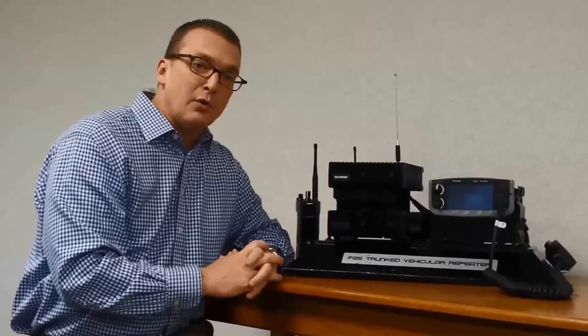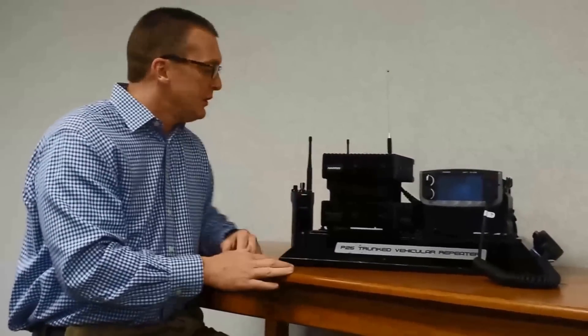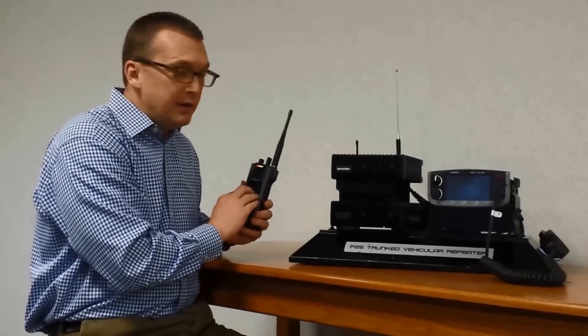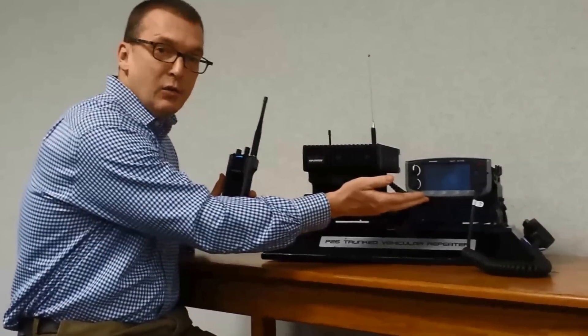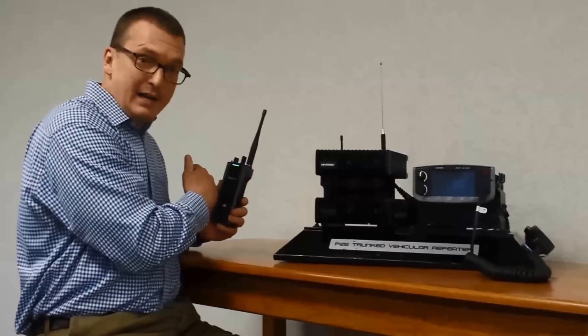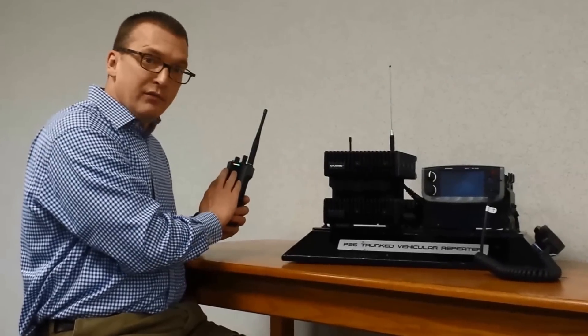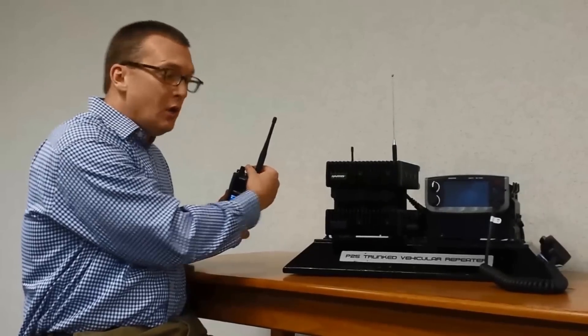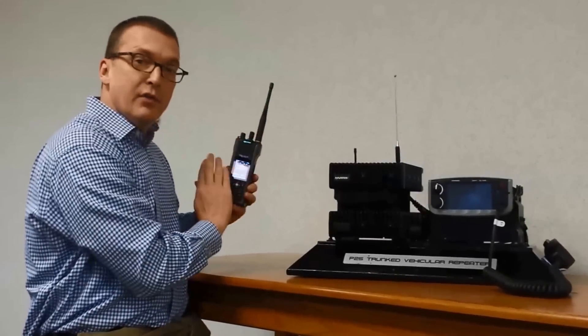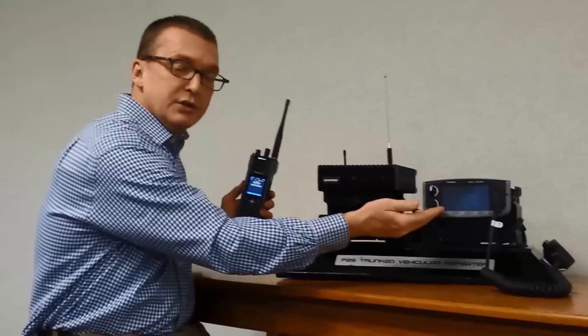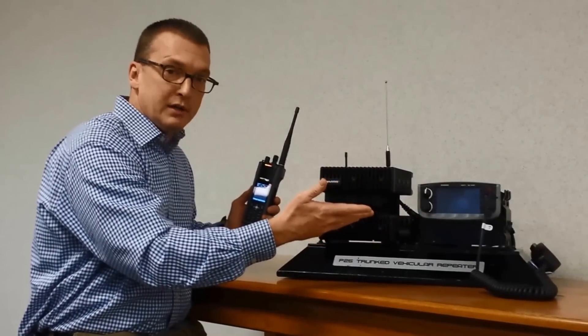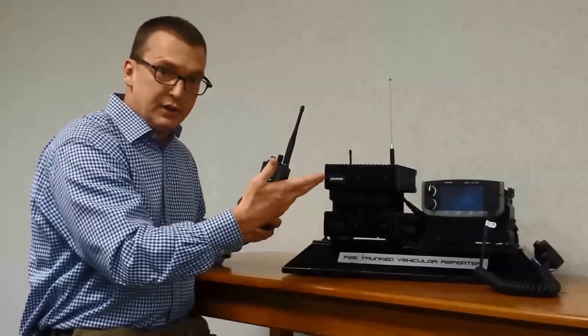The other one is called remote channel steering. Sometimes when you get out of the car, maybe you're on channel one, and your mobile is also on channel one. Once you get inside where you need that vehicular repeater for coverage, you might decide, I need to be on channel two. With this vehicular repeater, when you change the channel of the portable, it also changes the channel of the mobile. Many vehicular repeaters don't do that in the market today.